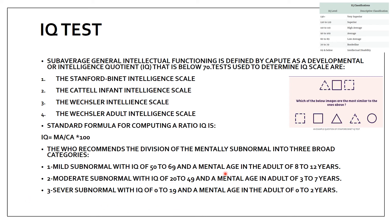If the mental age of the patient is 8 to 12 years irrespective of chronological age, the patient is classified as mild. If the mental age is 3 to 7 years, it is moderate. If the mental age is 0 to 2 years, it is severe. This is illustrated by the Stanford-Binet intellectual scale.